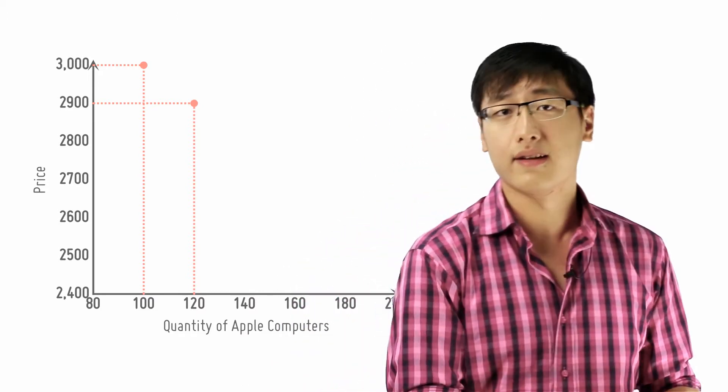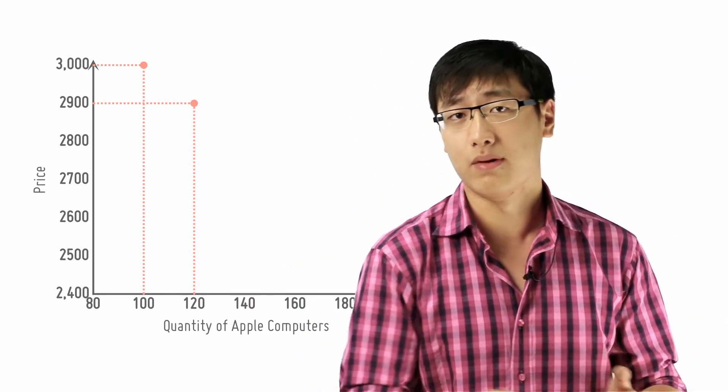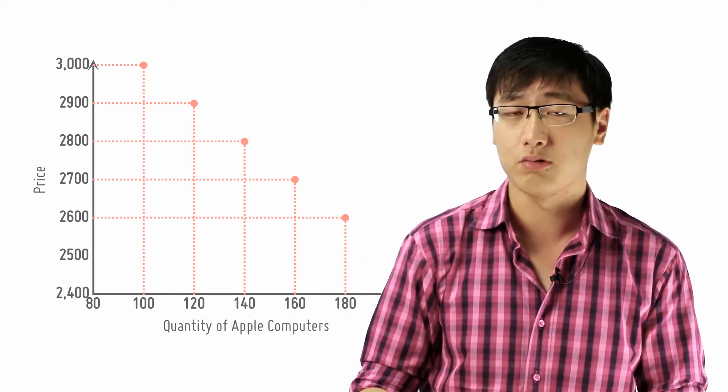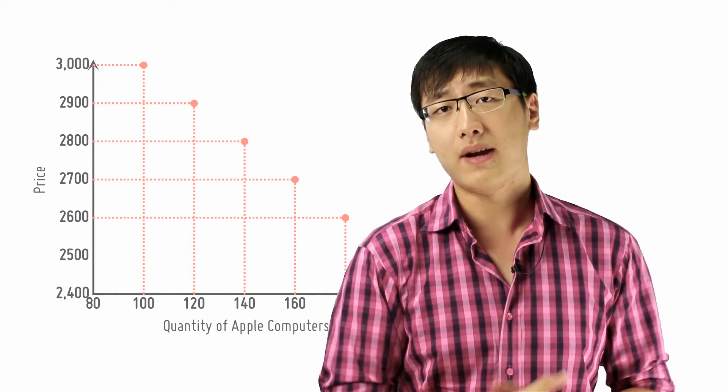Now if I lower it to $2,900, then some other people might say, hey, I think this is quite a good deal, so I'll join in and 120 people buy it. And so if you lower the price of Apple computers more and more and more, and you chart this progress, you realize that again you can form a line.